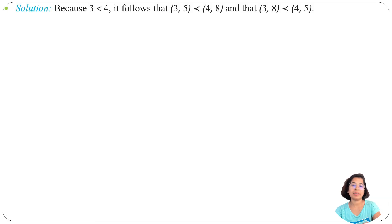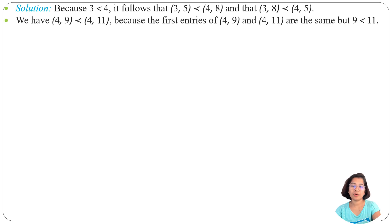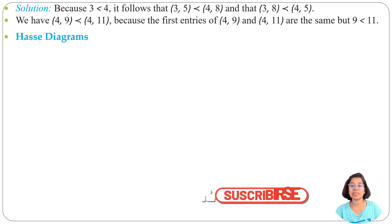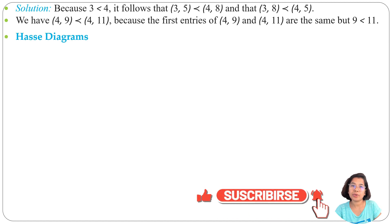So (3,5) is comparable to (4,8) and (3,8) is comparable to (4,5) by the ≤ relation. For (4,9) and (4,11), the first entries are the same, but 9 < 11, so they are comparable. In today's lecture I discussed total ordering, well-ordering, and lexicographical ordering. In the next lecture I will discuss Hasse diagrams. If this lecture was helpful, please like, share, and subscribe.